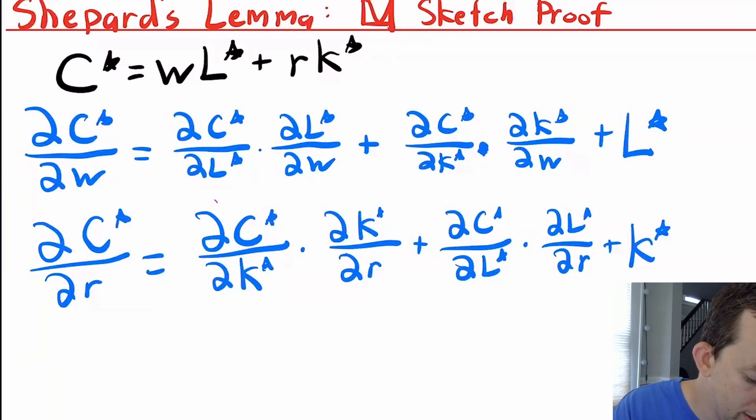And if I take DC star DW, I'm going to get DC star DL star times DL star DW, which is just basically saying how much does cost change when wage changes through the amount of labor I hire.